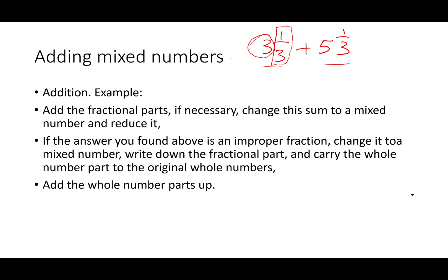To add two mixed numbers, we do it in two parts. The first part is we add the whole numbers together. Then we do the same for the fractional part — we add the fractions together. The third step is to sum out the results altogether.